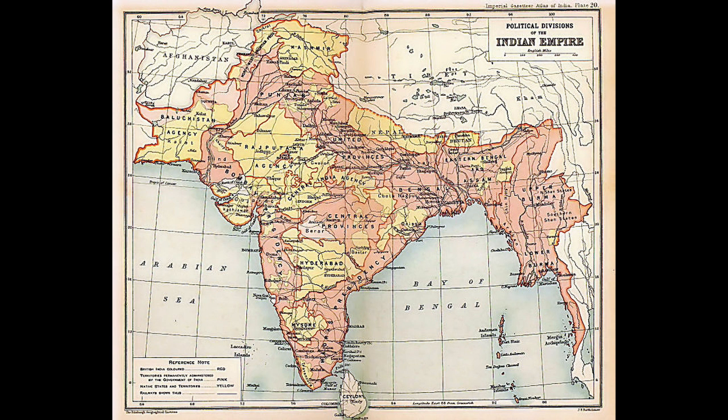The Constitution of India, which came into effect on the 26th of January 1950, states in its preamble that India is a sovereign, socialist, secular, democratic republic. India's form of government, traditionally described as quasi-federal with a strong centre and weak states, has grown increasingly federal since the late 1990s as a result of political, economic, and social changes.